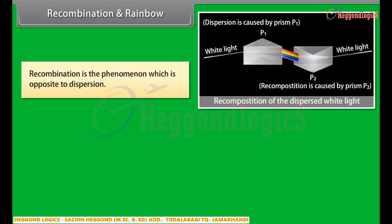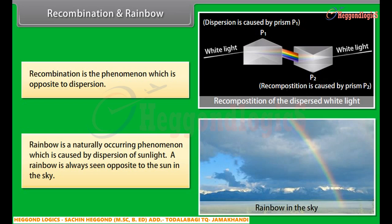Recombination: Isaac Newton observed that if he keeps two glass prisms parallel to each other such that one is inverted with respect to the other, then white light entering into one prism gets split into seven colors which, when falling on the other prism, recombine to give white light again. This is termed as recombination. A rainbow is a natural phenomenon which occurs as a result of dispersion. A rainbow is always seen opposite to the sun in the sky. During rain, water drops act as prisms for sunlight — they refract, disperse, and then internally reflect the sunlight to give the rainbow.